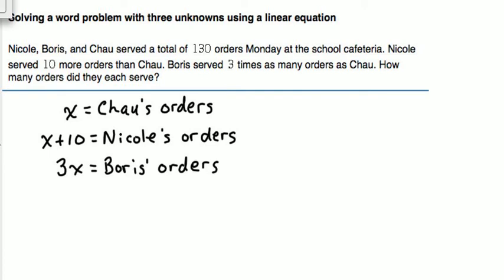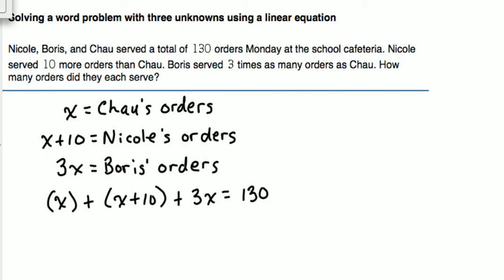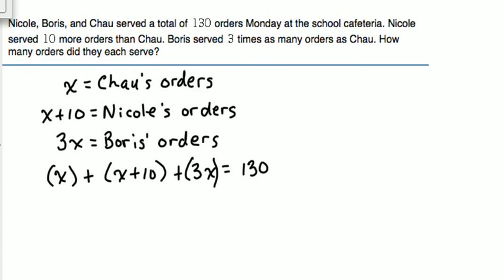Next up, we're given a piece of information at the beginning of the problem. It says Nicole, Boris, and Chao served a total of 130 orders, meaning that if you add up the number of Chao's orders, Nicole's orders, and Boris's orders, you would get 130. So that's exactly what we're going to do. I'm going to say X plus (X plus 10) plus 3X equals 130. The parentheses do not signify multiplication — the first X represents Chao's orders, X plus 10 represents Nicole's orders, and 3X represents Boris's orders.